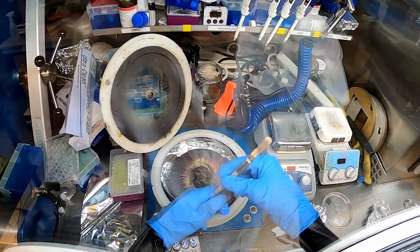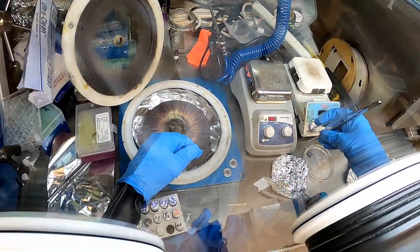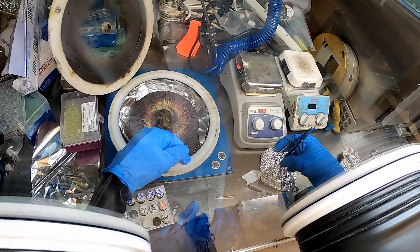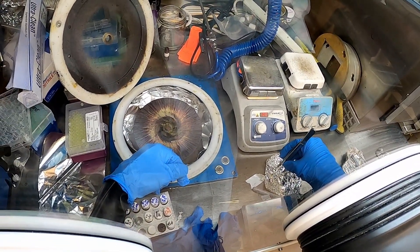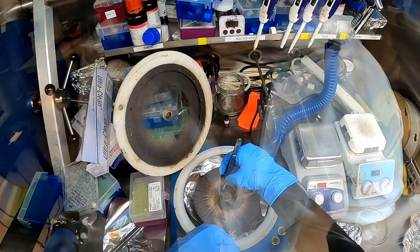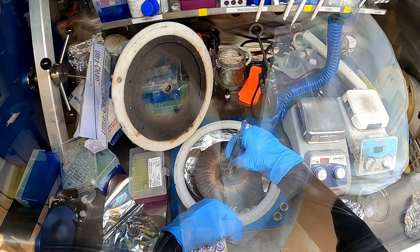After completing the dry run, we'll begin spin coating perovskite films. First we'll place a glass ITO substrate onto the chuck, turn on the vacuum, and then adjust the volume of the pipettor as needed.